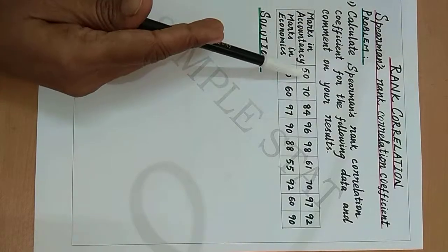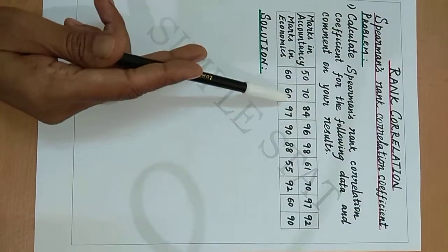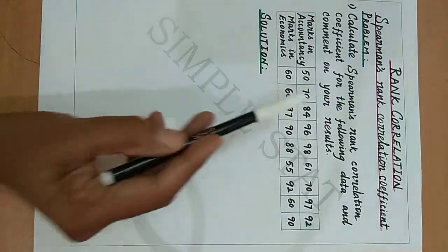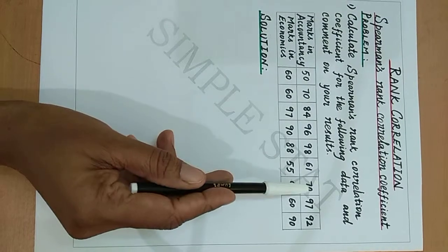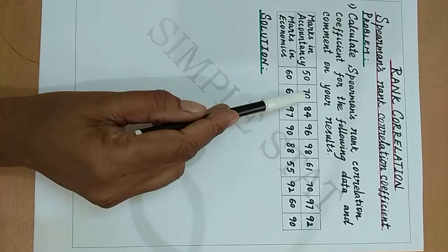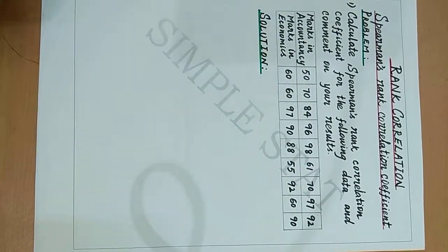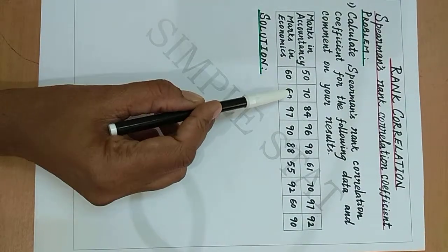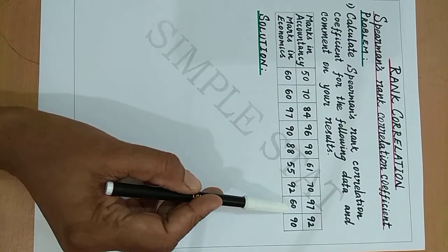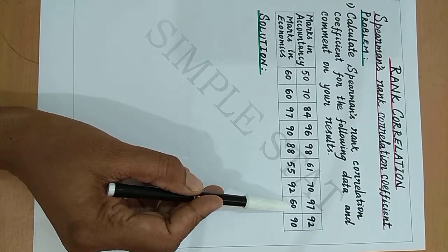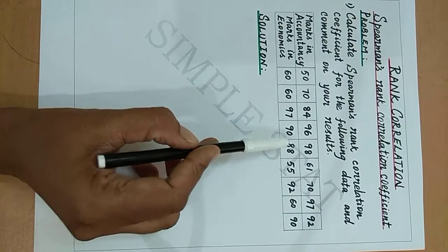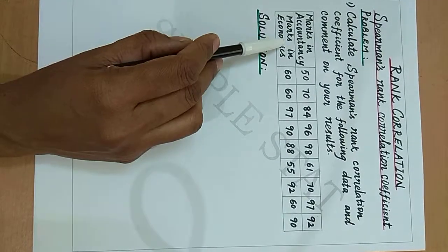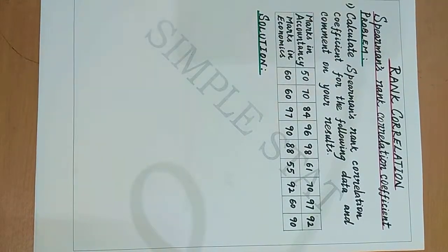Here we are given marks and not ranks. Note that 2 students have scored 70 marks in accountancy. Similarly, 3 students have scored 60 marks, and 2 students have scored 90 marks in economics. Therefore, this is a problem under equal or tied ranks.